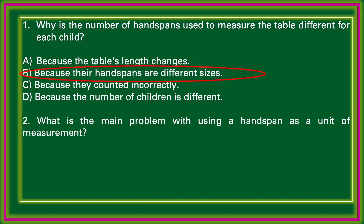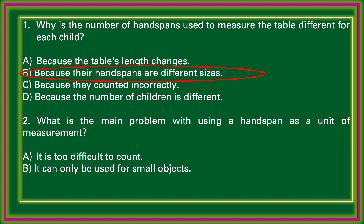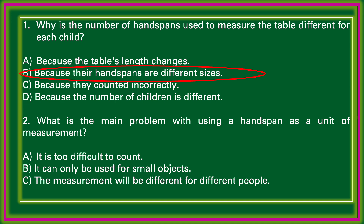Next: What is the main problem with using a hand span as a unit of measurement? Options: it is too difficult to count; it can only be used for small objects; the measurement will be different for different people; it is not a traditional unit. The correct answer: the measurement will be different for different people.